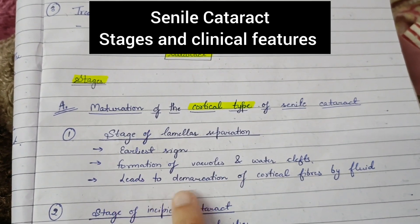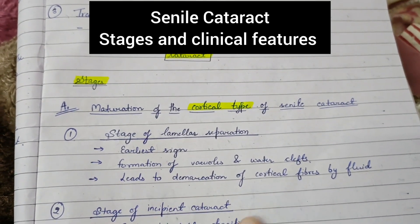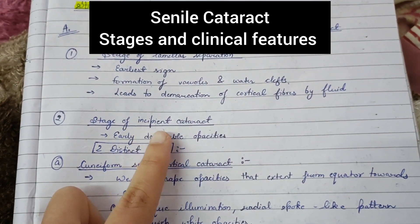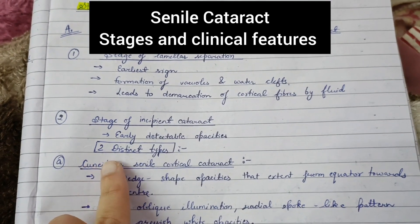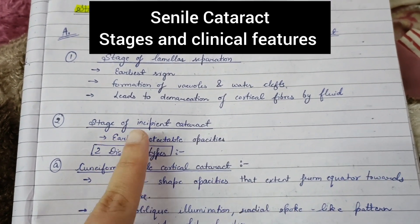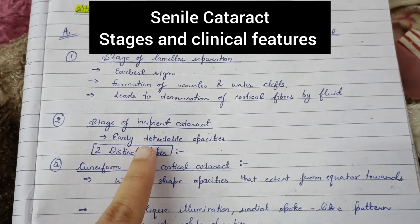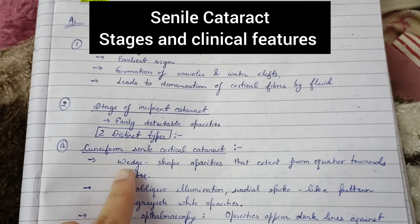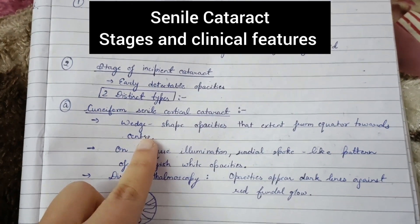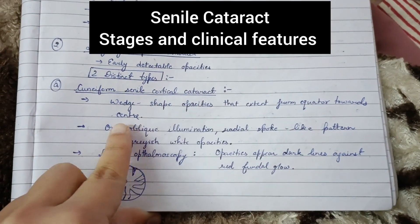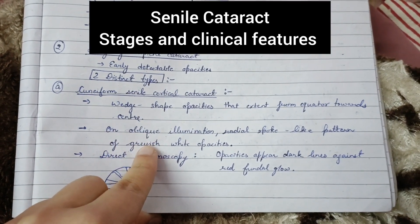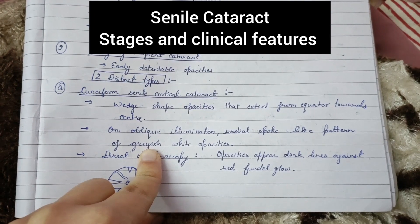The second stage is the stage of incipient cataract, which is further divided into two distinct types: cuneiform and cupuliform. In incipient cataract there is early detectable opacity. In cuneiform senile cortical cataract, wedge-shaped opacities are present. These wedge-shaped opacities extend from the equator to the center. On oblique illumination, radial spoke-like patterns of grayish-white opacities are seen.